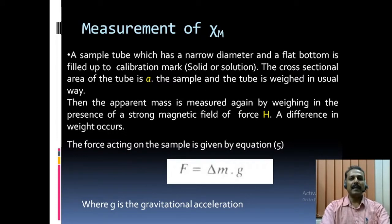Measurement of magnetic susceptibility: A sample tube, which has a narrow diameter and a flat bottom, is filled up to calibration mark. The cross-sectional area of the tube is A. The sample and the tube is weighed in a usual way. Then the apparent mass is measured again in the presence of a strong magnetic field of force H. A difference in weight occurs. The force acting on the sample is given by equation 5: F is equal to delta M, the difference in mass, into gravitational acceleration.